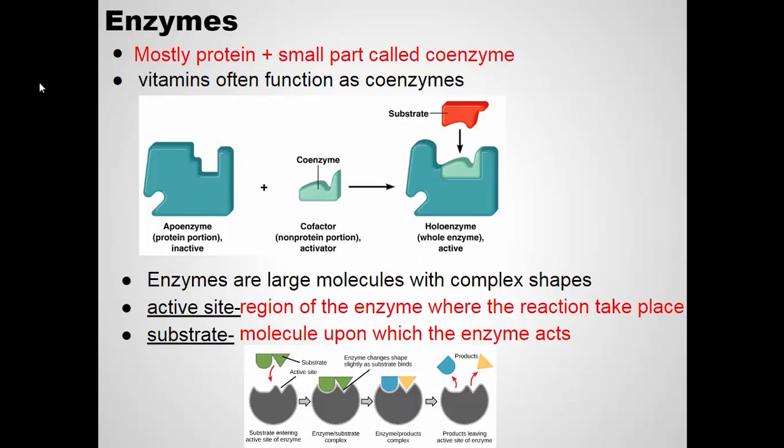Sometimes there's a special molecule needed to help allow the enzyme to form its final shape. We call those coenzymes or cofactors. Oftentimes vitamins that we take act as these coenzymes — the substrate wouldn't fit into the enzyme without this coenzyme being in place first. The key thing about an enzyme that allows it to work is its shape. The shape is the most important thing about the enzyme. The area where the substrate and the enzyme bind together is called the active site — that's where the reaction takes place.